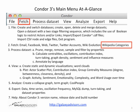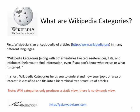Today's video is going to focus on the Fetch menu and specifically we're going to look at fetching Wikipedia categories. The first question is: what are Wikipedia categories? Wikipedia is an encyclopedia of articles in many different languages. Wikipedia categories, along with other features like cross-references, lists, and info boxes, help you to find information even if you don't know what exists or what it is called.